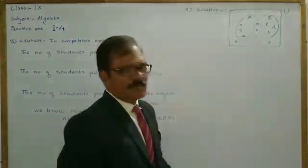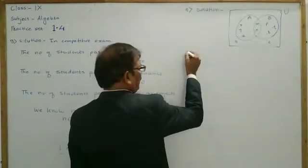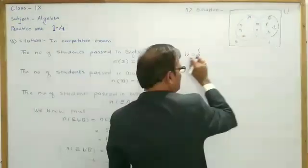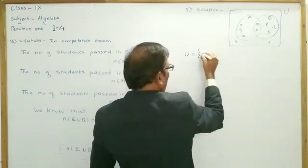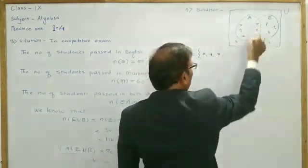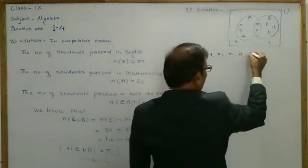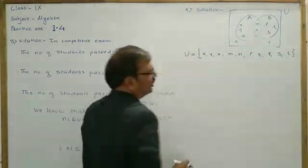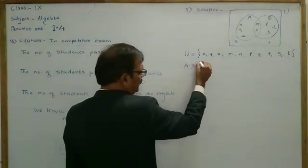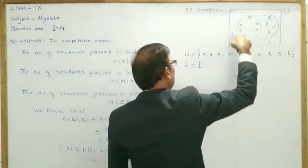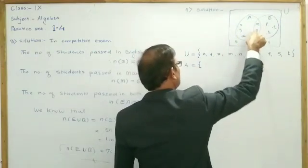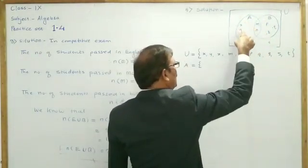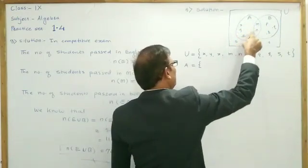First, you find the value of U, that is the universal set. Universal set means take all the elements in U. Set A contains elements X, Y, and Z. Take the value of E — how many elements are in E? X, Y, Z, and these two also — M and N — because these elements are here inside the circle.